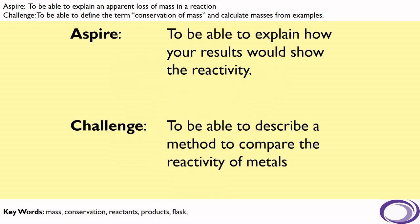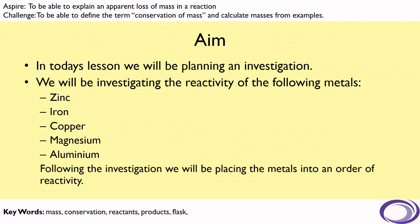Our challenge is to be able to describe a method to compare the reactivity of metals, and our aspire is to be able to explain how your results would show the reactivity of these metals. In today's lesson we will be planning an investigation into the reactivity of the following metals: zinc, iron, copper, magnesium and aluminium. Following that investigation we will be placing those metals into an order of reactivity.